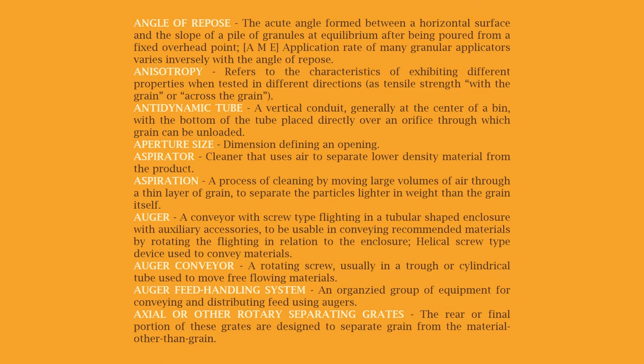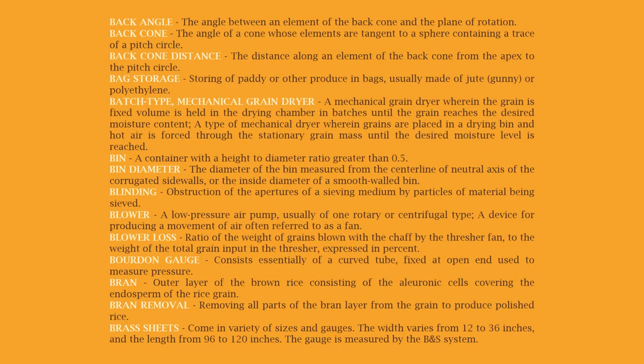Axial or other rotary separating grates: the rear or final portion of these grates are designed to separate grain from material other than grain. Back angle: the angle between an element of the back cone in the plane of rotation. Back cone: the angle of a cone whose elements are tangent to a sphere containing a trace of a pitch circle. Back cone distance: the distance along an element of the back cone from the apex to the pitch circle.